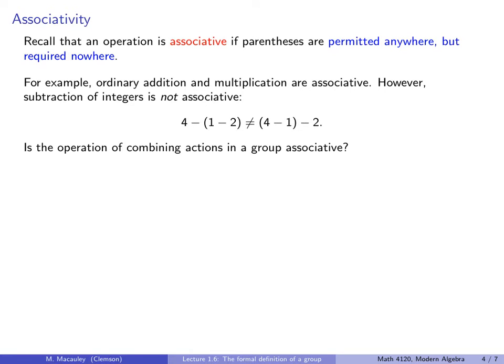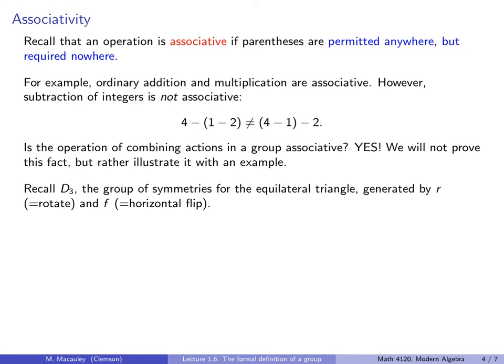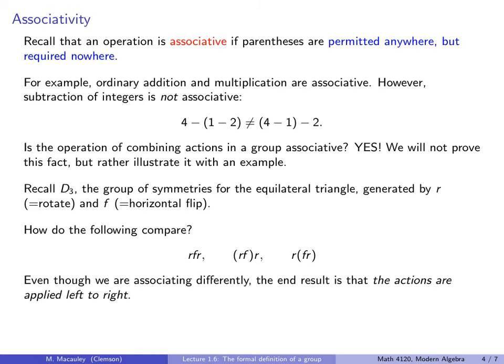So let me ask you, is the operation of combining actions in a group associative? Yes or no? Think about that. The answer is yes. We will not actually prove this fact, but rather we will illustrate it with an example. Let's recall D3, the group of symmetries for the equilateral triangle. It's the triangle puzzle. It's generated by r, which is rotate, and f, which is a horizontal flip. How do the following compare? Doing r, then doing f, and then doing r. I claim that's the same thing as doing r and then f, and then doing r. Or by doing r and then doing f and r. You see how the parentheses doesn't make any difference? Even though we are associating differently, the end result is that the actions are applied from left to right.